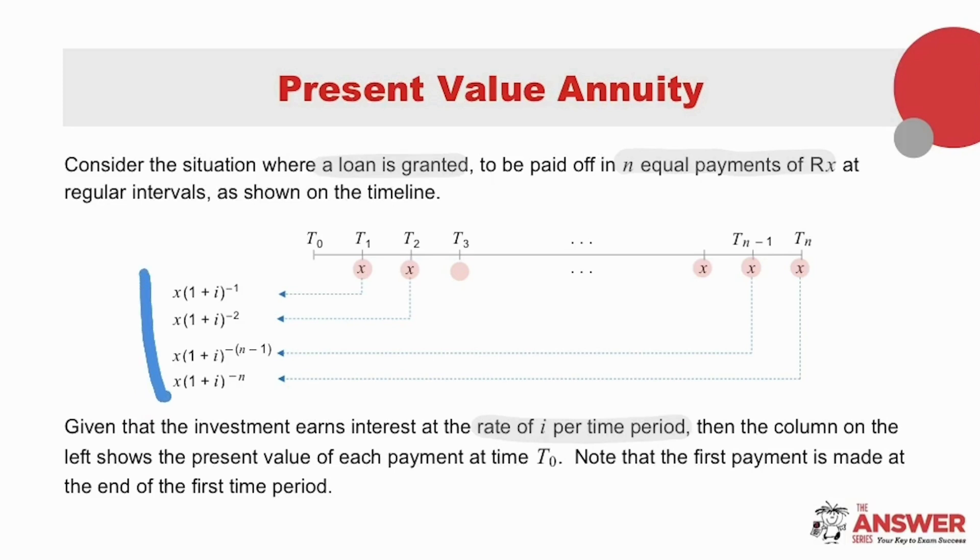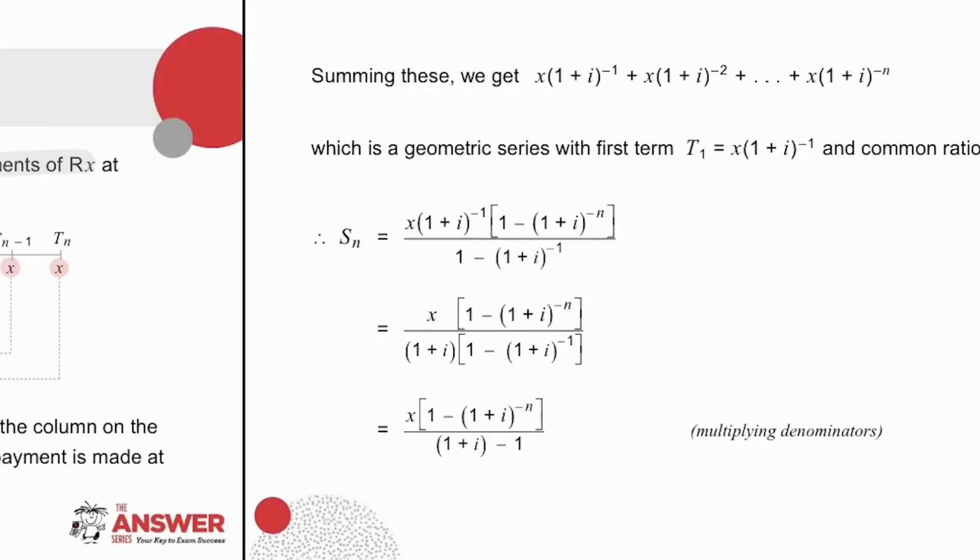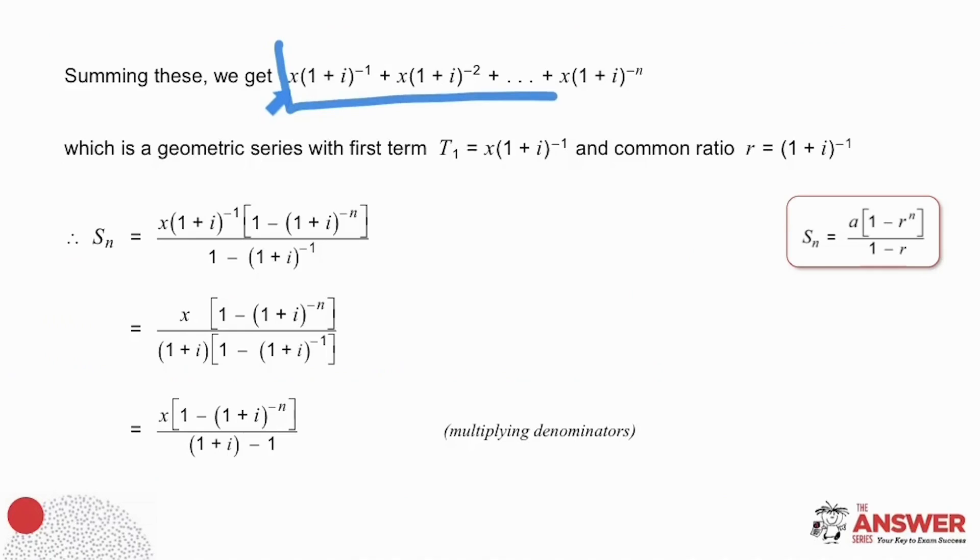Now consider the total value of all these payments on the left-hand side, the sum of all these values at t0. This is what it would look like if we were to write the sum of these payments out: the first payment, the second payment, and so on, all the way up until the nth payment, which is the last payment.